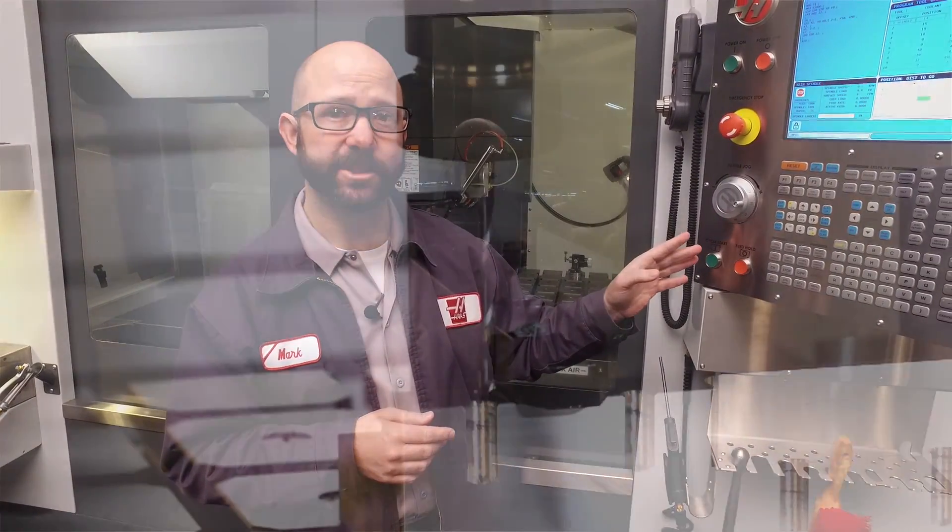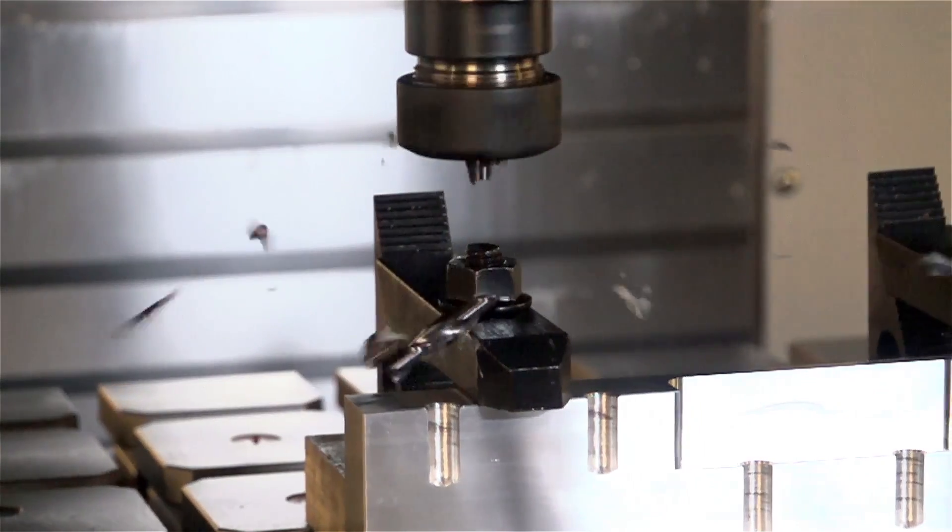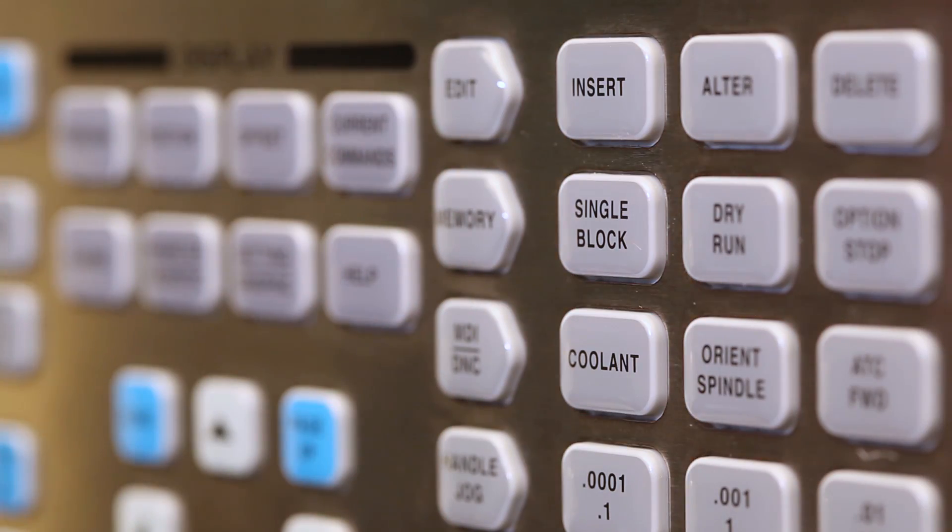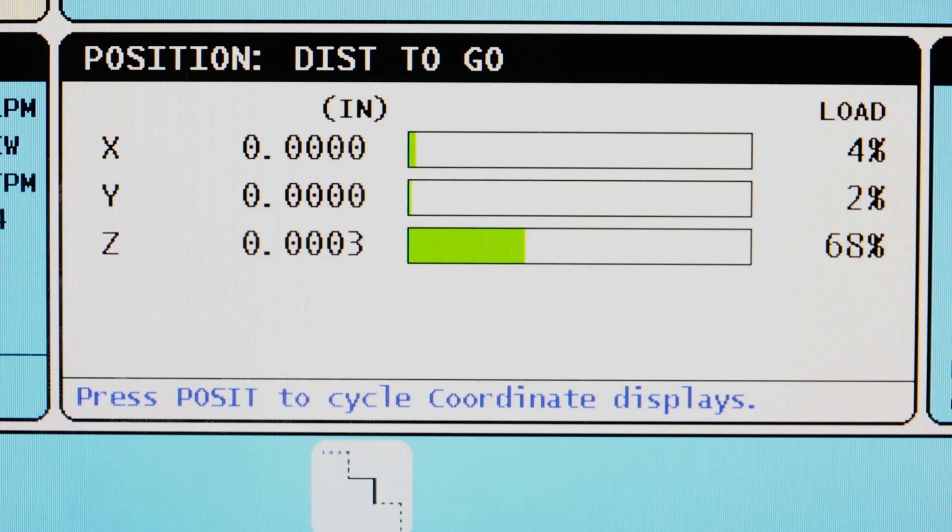After making a change to a program, we could just hit the cycle start button and hope for the best, or we could put the machine into single block mode and keep an eye on our position screen to avoid problems.